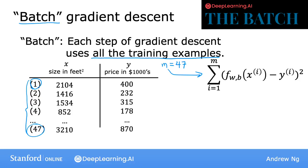And it turns out that there are other versions of gradient descent that do not look at the entire training set, but instead look at smaller subsets of the training data at each update step. But we'll use batch gradient descent for linear regression.